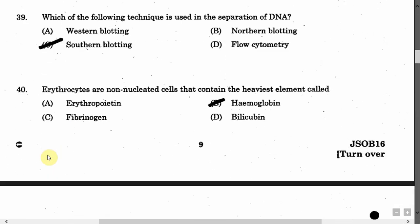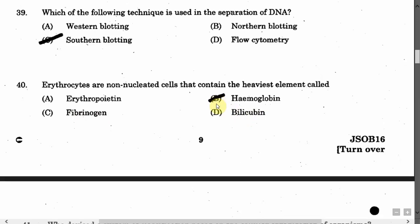The next question is: Erythrocytes are non-nucleated cells that contain the heaviest element called — Option A: Erythropoietin. Option B: Hemoglobin. Option C: Fibrinogen. Option D: Bilirubin. The correct answer is Option B, that is hemoglobin.